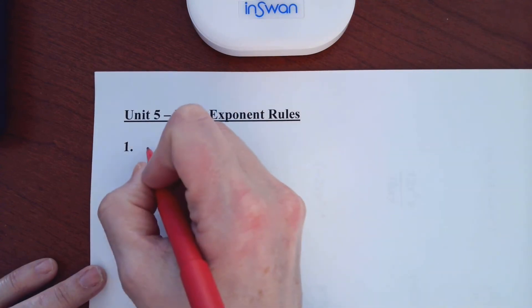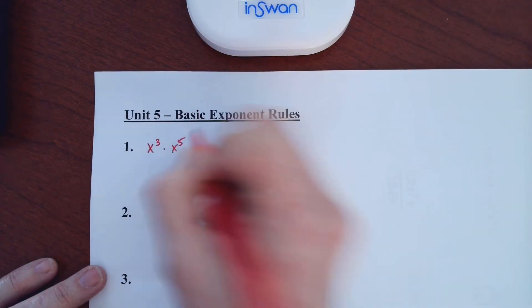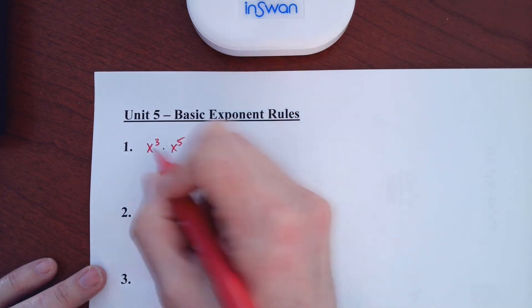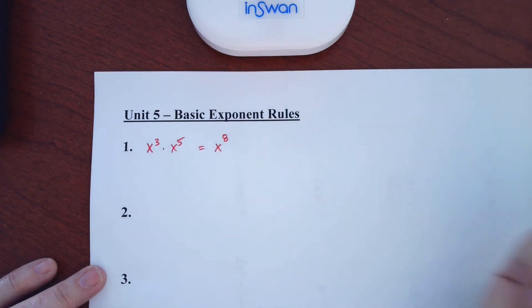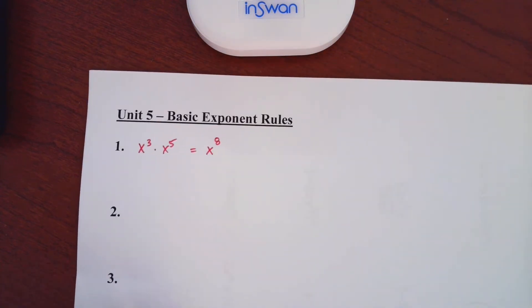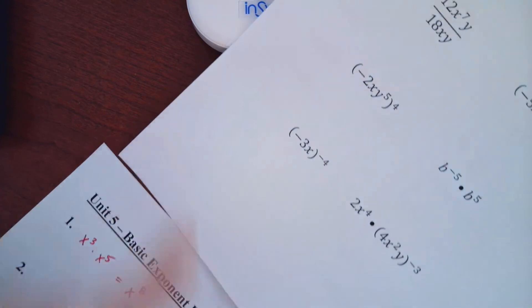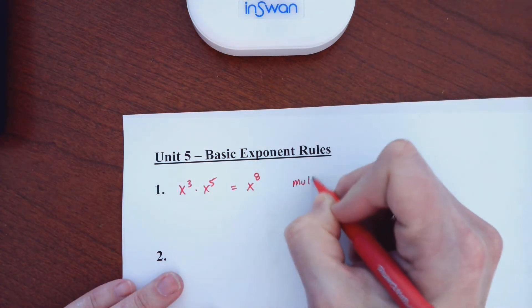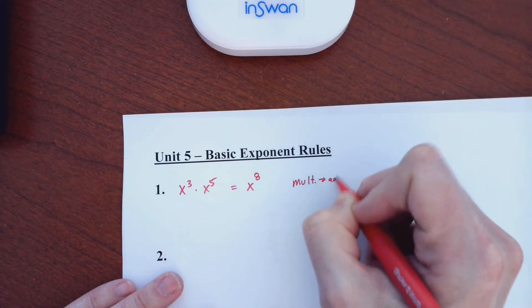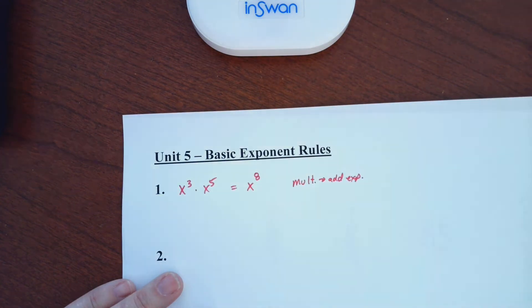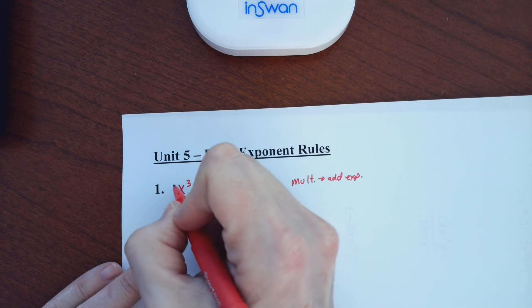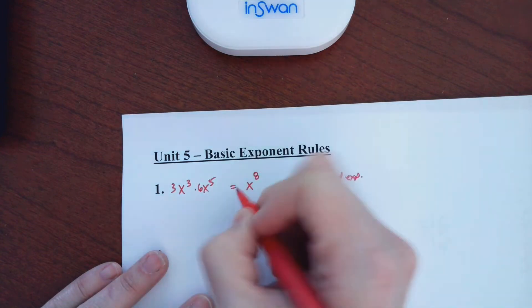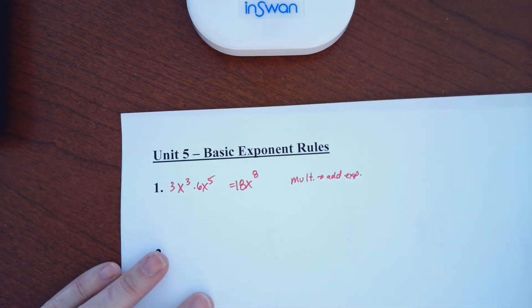When you multiply exponents, like let's say you have x to the third times x to the fifth, you know that you add your exponents, right? If you want to write these down, you could write these rules at the bottom of your paper or over to the side. When you multiply, you add exponents. That's rule number one. Now, if you have a number in front of these things, like let's say you have a 3 and a 6, you still multiply numbers. That would be 18. So that doesn't change that fact.